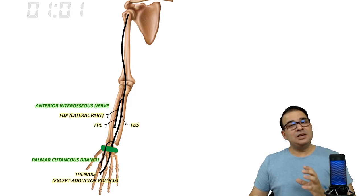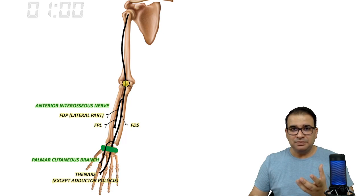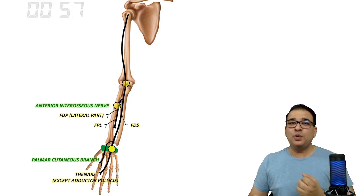Consider median nerve injury at three possible sites: the higher injury, the lower injury like in carpal tunnel syndrome, and a deeper injury like injury to anterior interosseous nerve.